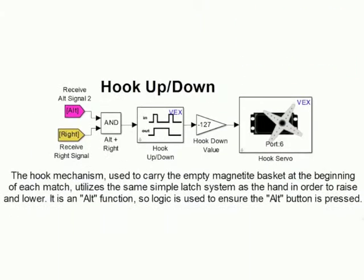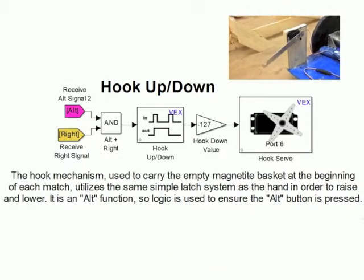The programming for our robot's carrier hook is identical to that of the hand. Also shown here is our use of color-coded go-to and from blocks in order to visually separate the distinct sections of the program.